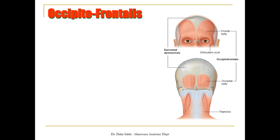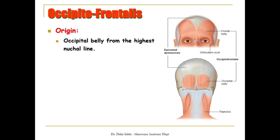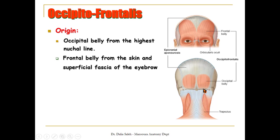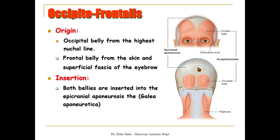The only muscle present in the scalp is called the occipitofrontalis muscle. From its name, it is made of two bellies: one on the front called the frontal belly, and two on the back called the occipital bellies. The origin of the occipital bellies: they arise from the highest nuchal line. The nuchal line is the boundary between the scalp and the back of the neck. The frontal belly, however, does not have any bony attachment — it is attached to the skin and the superficial fascia of the eyebrows. The insertion of both bellies: they are inserted into the epicranial aponeurosis.